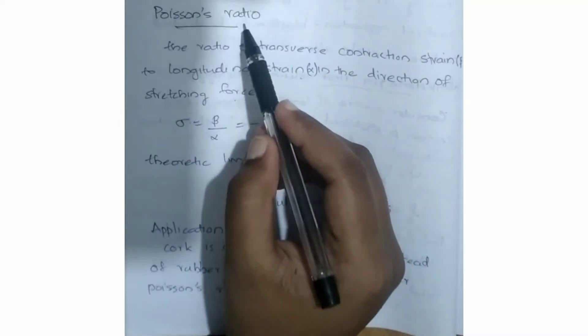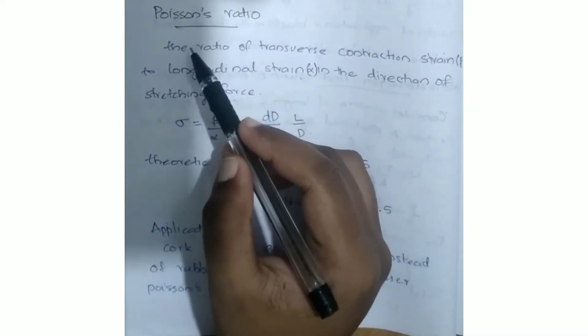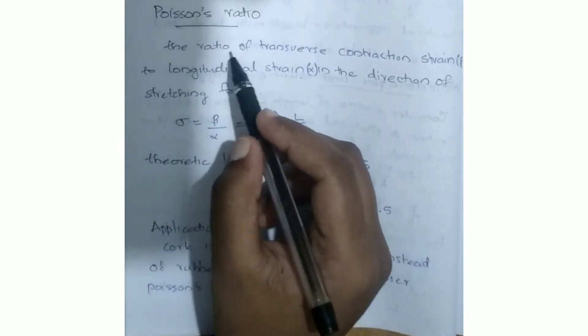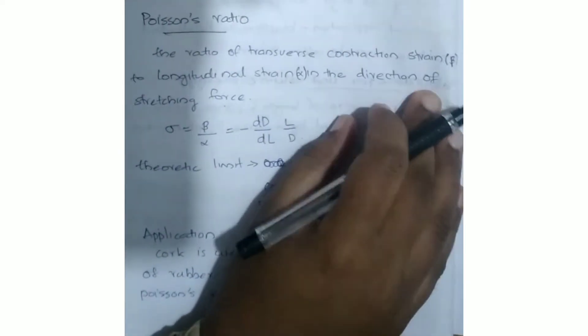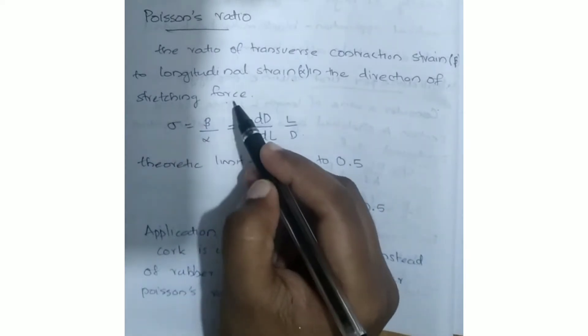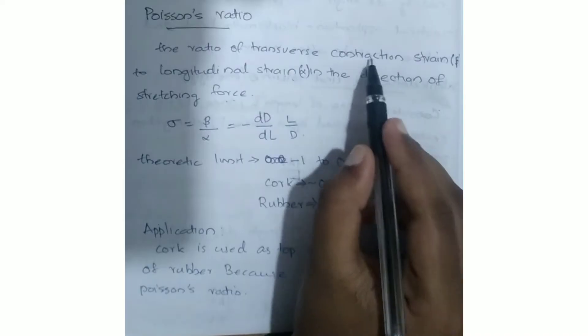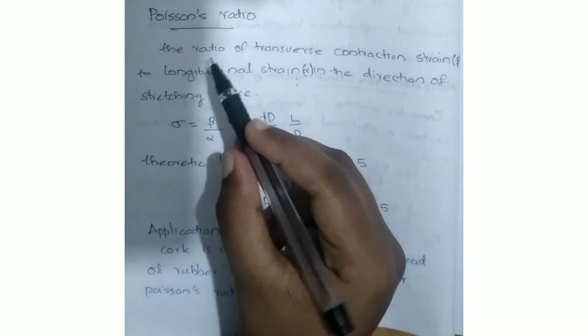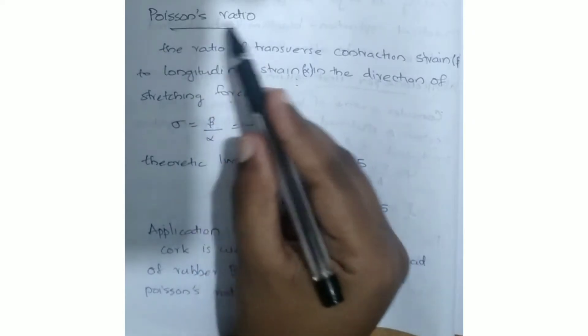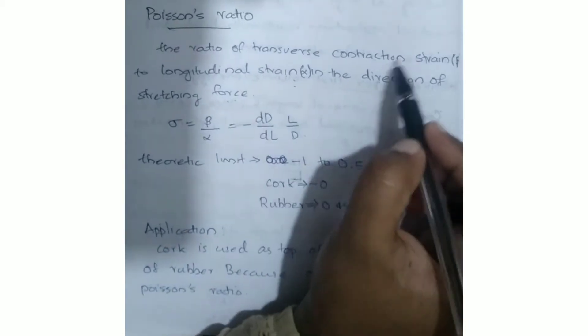Next, what is Poisson's ratio? Poisson's ratio is the ratio of transverse contraction strain beta to longitudinal strain alpha in the direction of the stretching force. That is, the contraction strain divided by longitudinal strain is the Poisson's ratio. We denote the Poisson's ratio as sigma. Sigma is equal to beta by alpha.